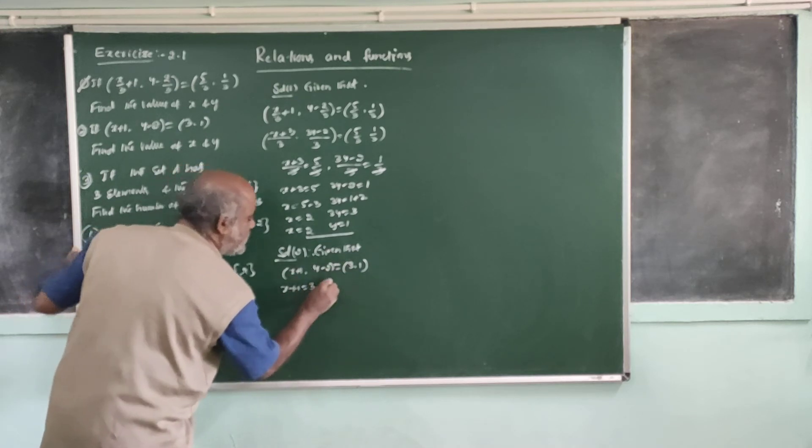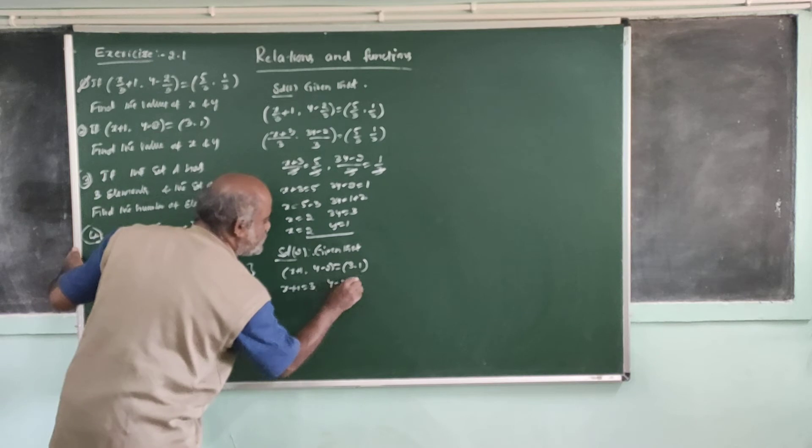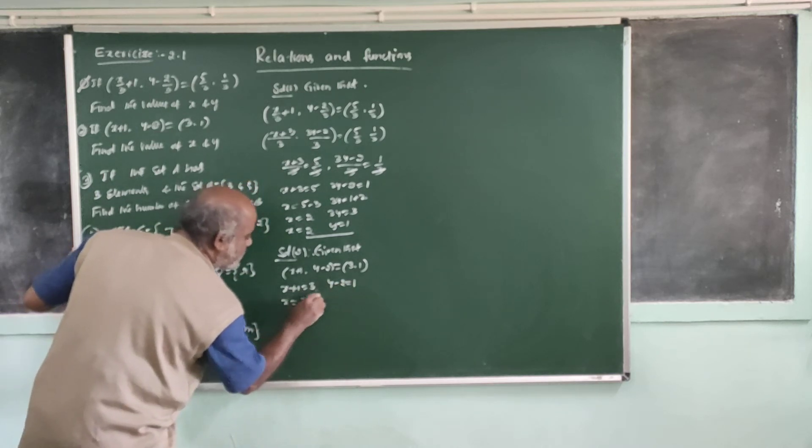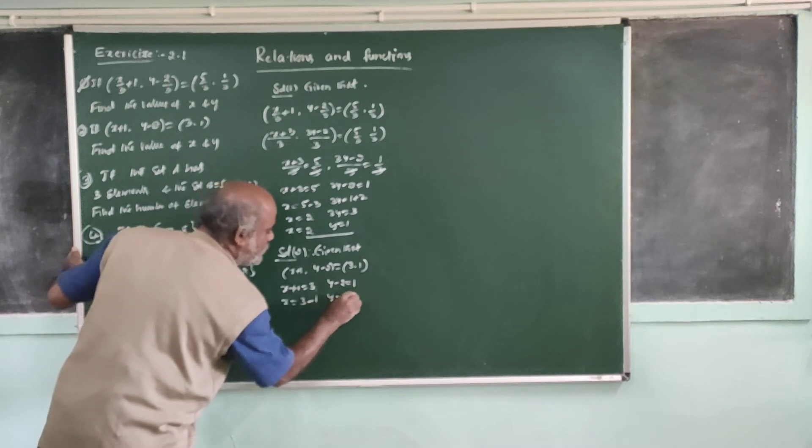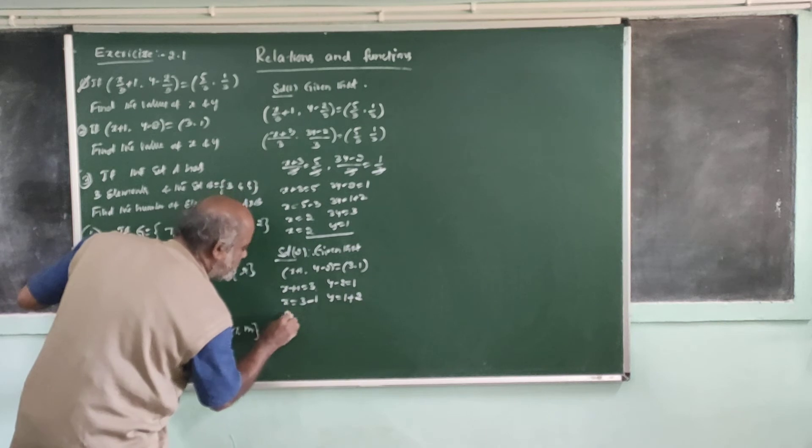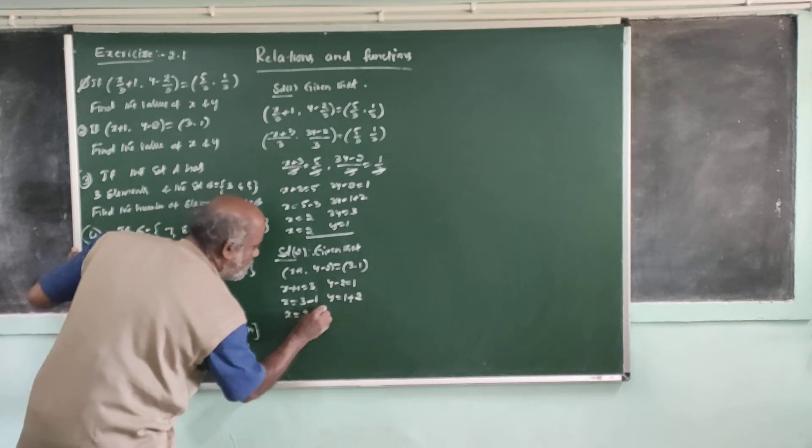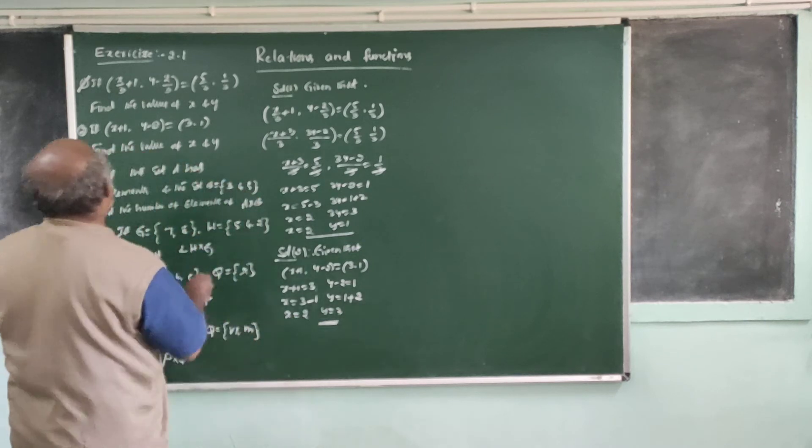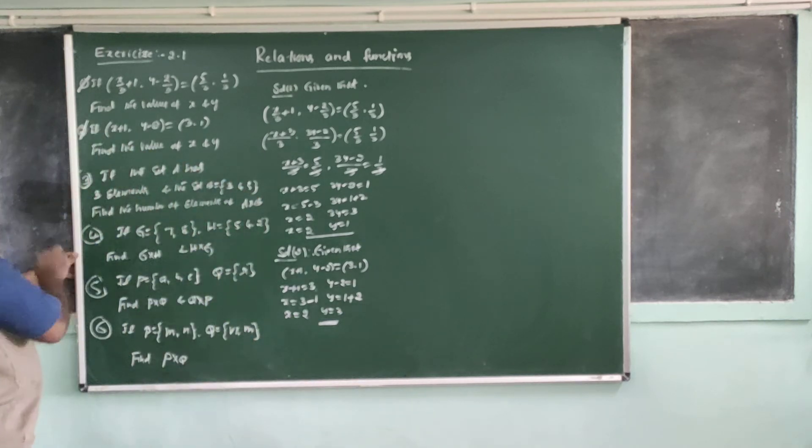x plus 1 is equal to 3. y minus 2 is equal to 1. Now y is equal to 3. 1 and pair x plus 1 is equal to minus 1. y is equal to 1. Minus 2 is equal to 1 plus 2. y is equal to 3. That's R. So y is equal to 3. Moon is equal to 1.